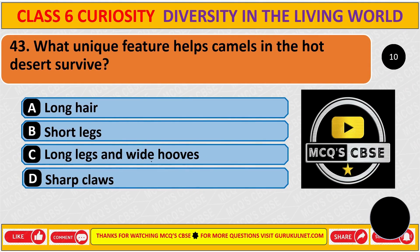What unique features help camels in the hot desert survive? The correct answer is C: long legs and wide hooves.